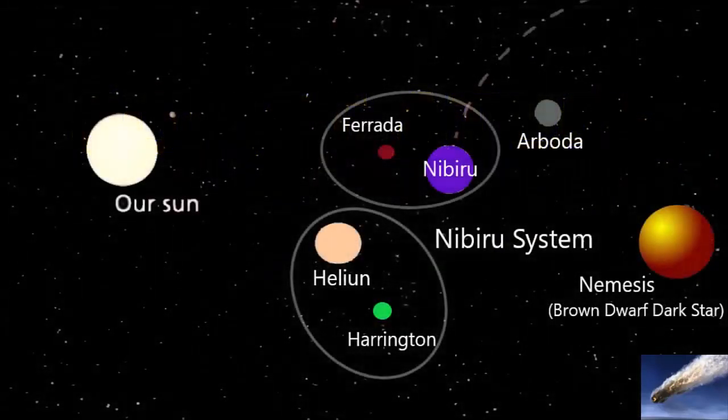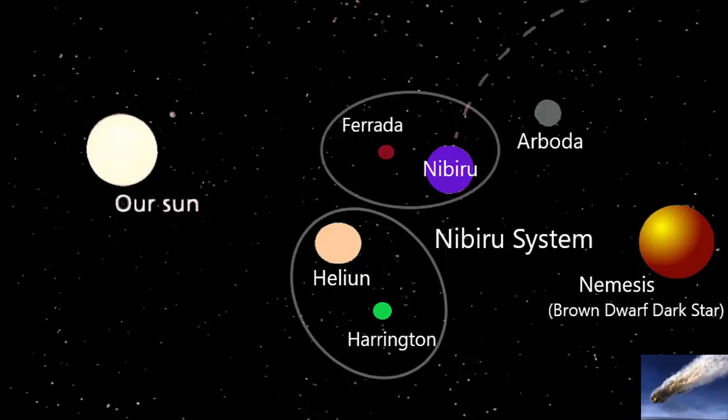Nibiru, by all definitions and concepts, and by the research of various scholars, is the largest of a handful of planets that orbit around a brown dwarf star named Nemesis. In essence, it is a mini-solar system.